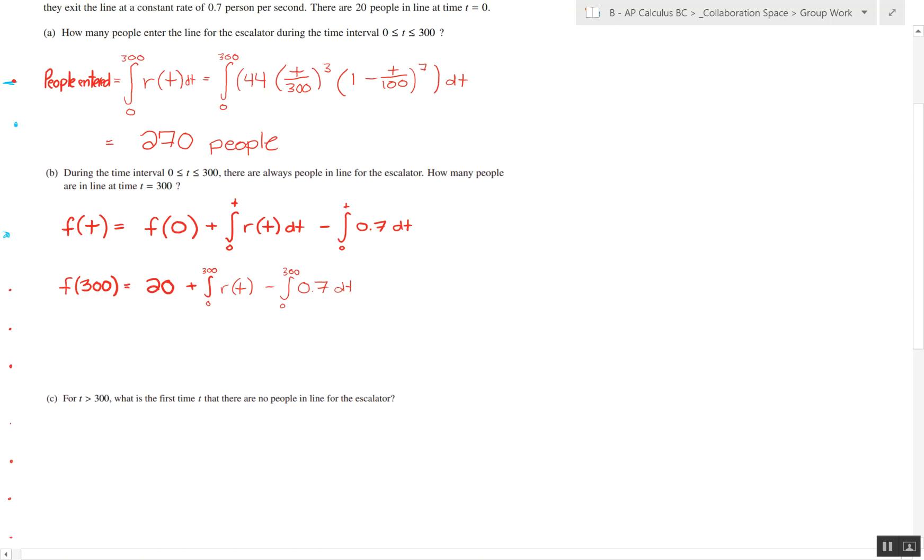Now we have to find the integral from 0 to 300 of r of t, which gives us how many people have entered, and the integral from 0 to 300 of 0.7, which is how many people have exited the line. If we compute these values, we end up with 80 people in line at time t equals 300.